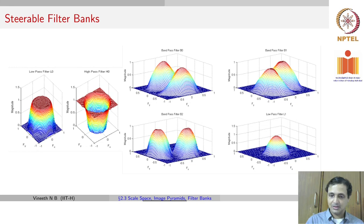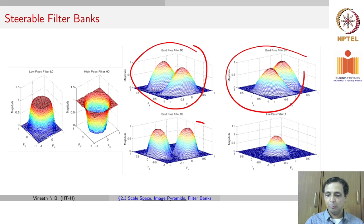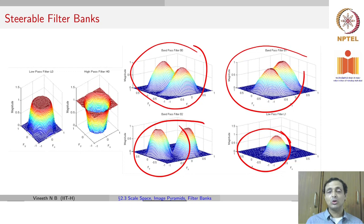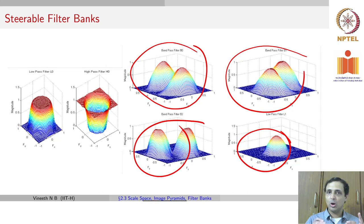With steerable filter banks you can take band pass filters B0, B1, B2, and a low pass filter, combine the responses of an image to all these filters, and store statistics at each pixel — such as mean and standard deviation. You can cluster those values across filter bank responses to get a representation for your texture.